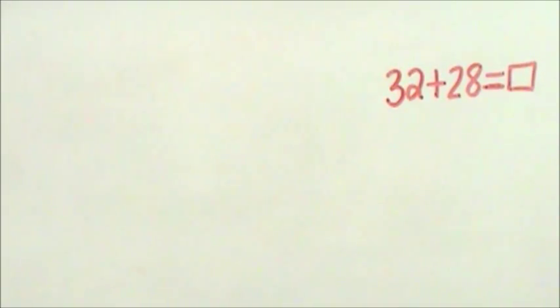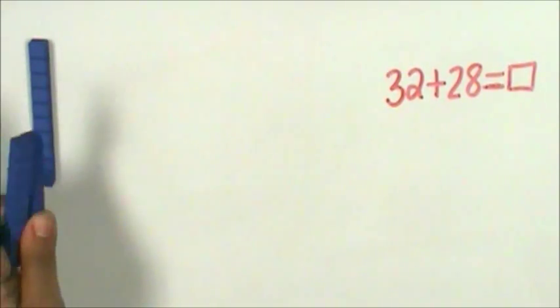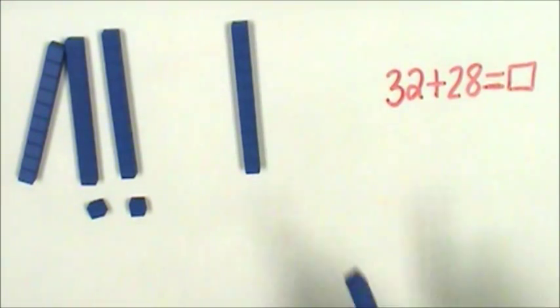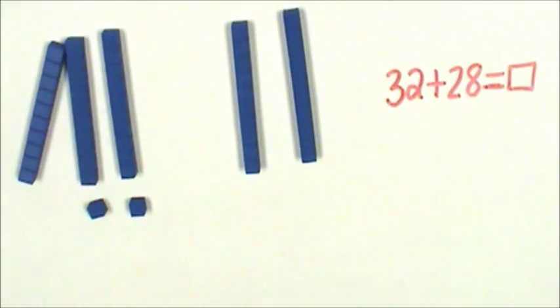Let's determine the sum of 32 and 28. First, use knowledge of place value to think about the number of tens and the number of ones that compose 32 and 28. 32 has three tens and two ones. 28 is composed of two tens and eight ones.